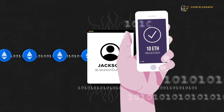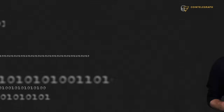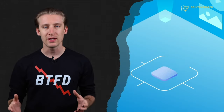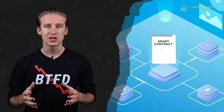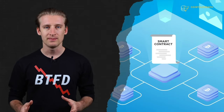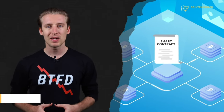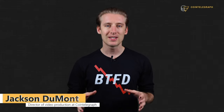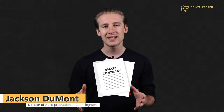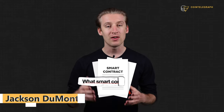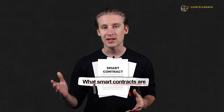Simple as that. Of course, that's a very basic example, but what makes smart contracts so innovative are that they are built on blockchain technology. I'm Jackson Dumont, Director of Video Production at Cointelegraph, and I'm here today to give you a concise explanation of what smart contracts are and how they work.